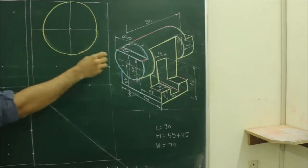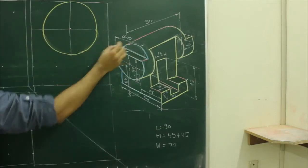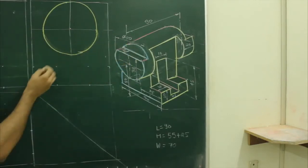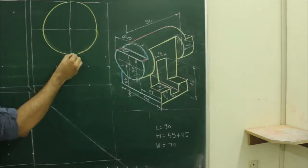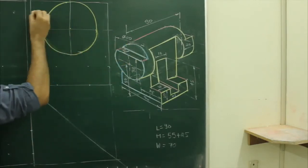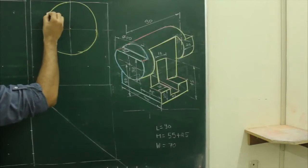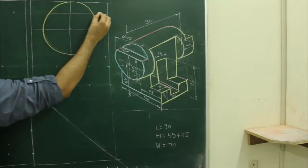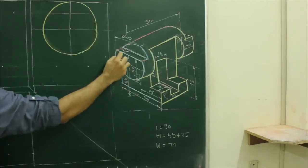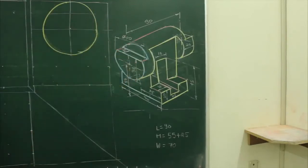After that, they have given 38 from the bottom — there is one line at that position — so we will draw that line.